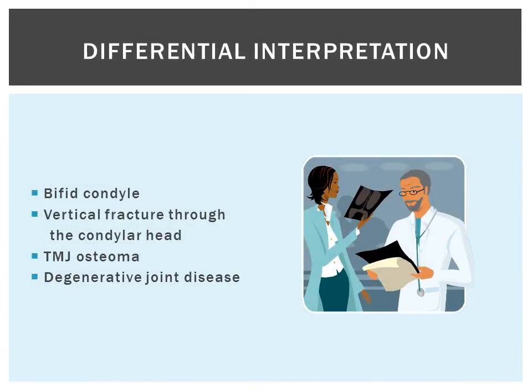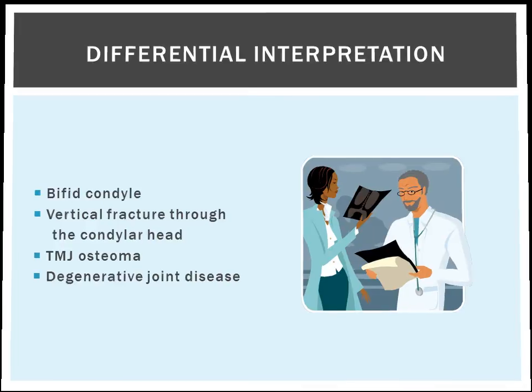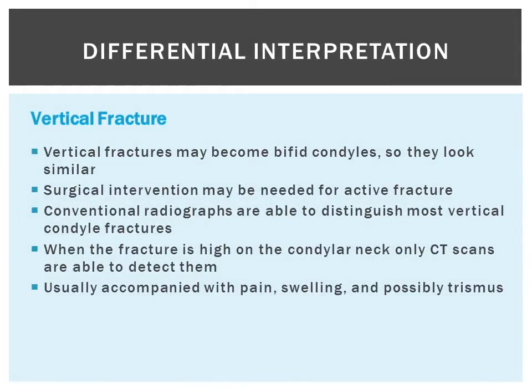Moving on to differential interpretation. The first is bifed condyle, obviously. The second is vertical fracture through the condylar head. The third is TMJ osteoma, and the fourth is degenerative joint disease. A vertical fracture often becomes a bifed condyle, so they can look very similar. The difference is that a vertical fracture may sometimes need surgical intervention, although most of the time surgery is not indicated. Most of the time you can tell the difference on conventional radiographs, but if the fracture is high on the condyle or neck, a CT scan is needed.